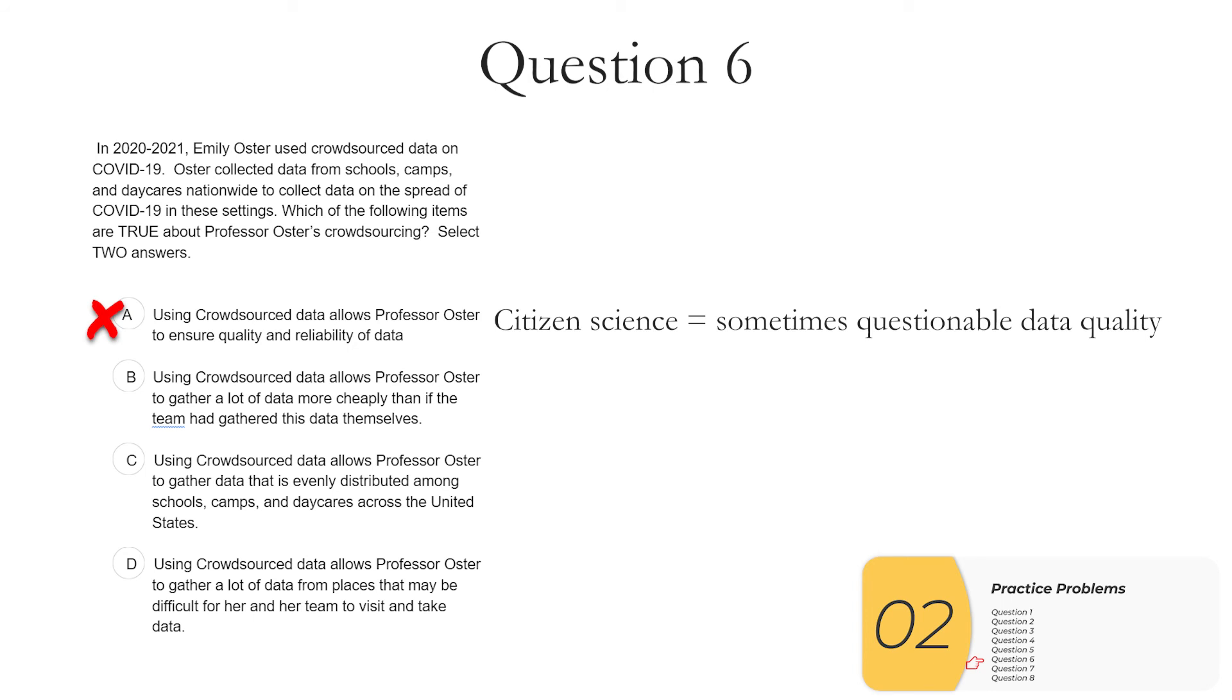B, crowdsourced data allows Professor Oster to gather a lot more data more cheaply than if the team had gathered this data themselves. So part of the plus about using plebs to get your data is that they're not highly paid scientists. So this one is definitely true.